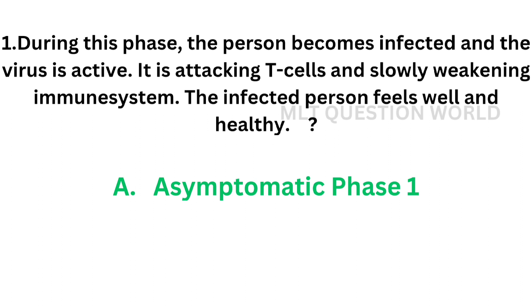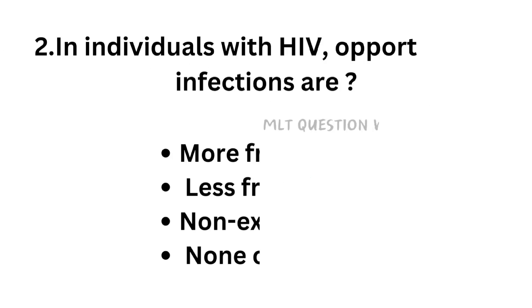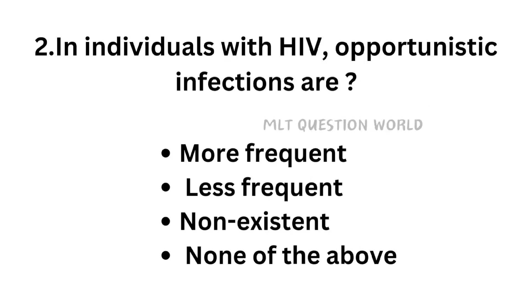The correct answer is option A, asymptomatic phase 1. During this phase, the person becomes infected and the virus is active, attacking T cells and slowly weakening the immune system, but the person remains healthy.